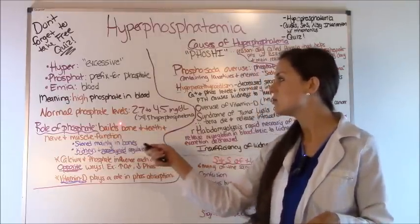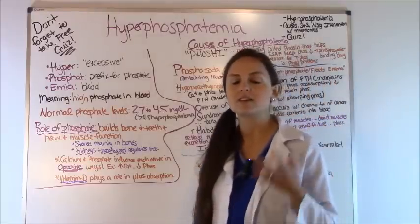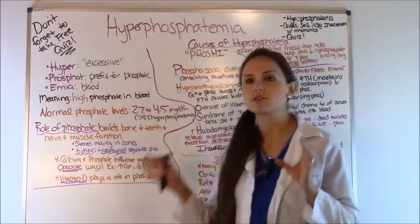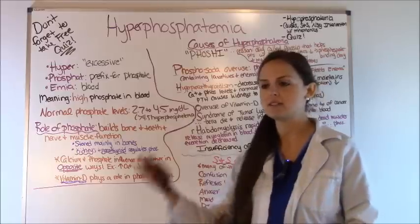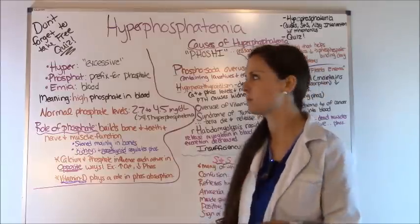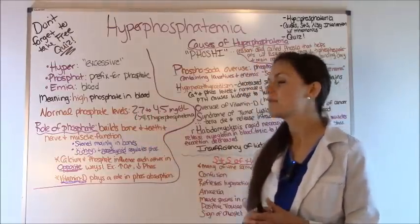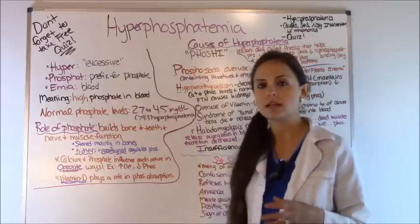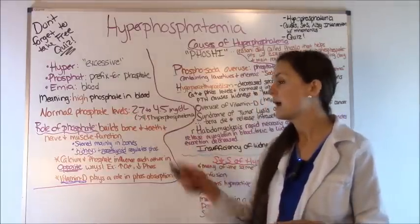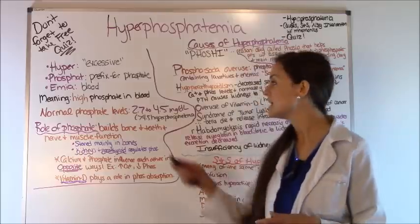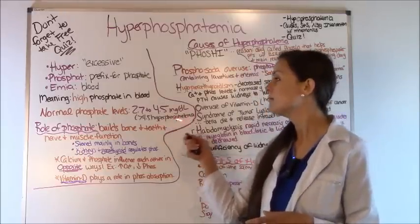Now what is a normal phosphate level? You want to know this because on exams it's going to throw lab values at you and you need to know if this is normal or not. So 2.7 to 4.5 milligrams per deciliter is the normal range, and anything greater than 4.5 milligrams is considered hyperphosphatemia.